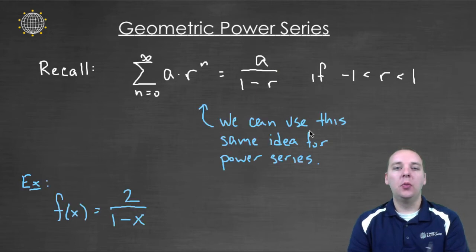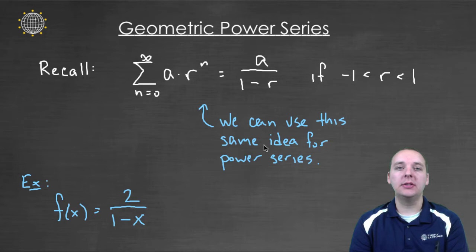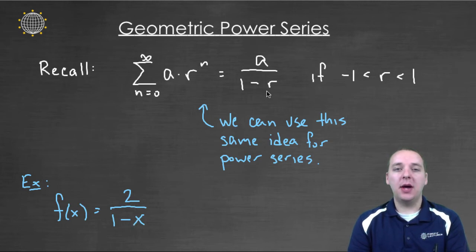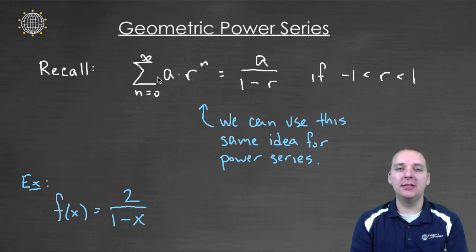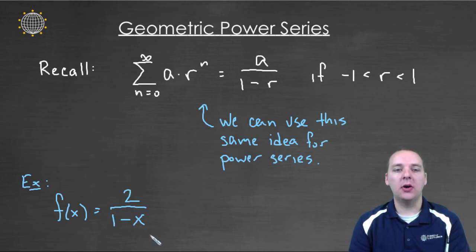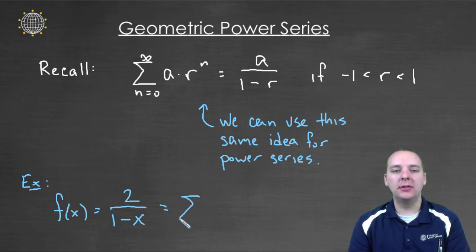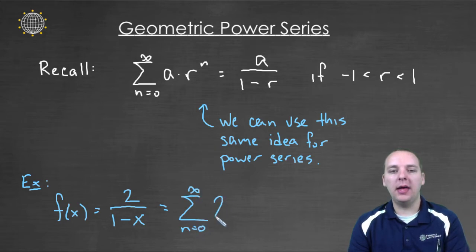Here's what we're going to do: use this same idea for power series. If we have a function that basically resembles a over one minus r — it doesn't matter if r is a constant or a variable — as long as r is between plus or minus one, this will equal the infinite series. We can write it as the sum from n equals zero to infinity of a times r to the n.